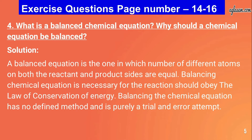Question number four: what is a balanced chemical equation and why should a chemical equation be balanced? A balanced equation is one in which the number of different atoms on both the reactant and product sides are equal. Balancing is necessary so that the reaction obeys the law of conservation of energy. Balancing has no defined method and is purely a trial and error attempt.